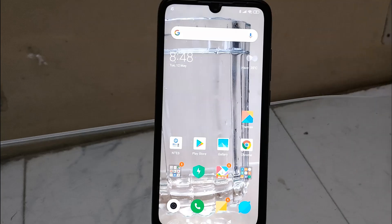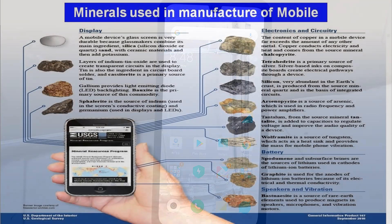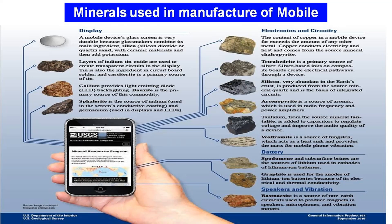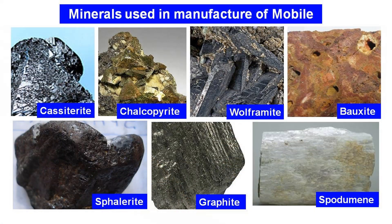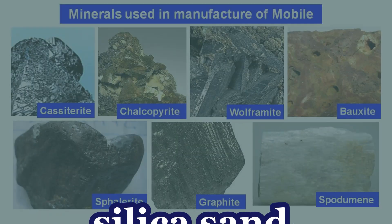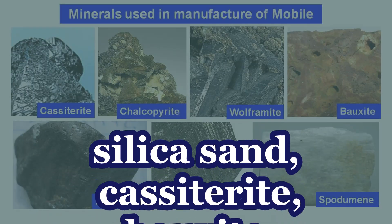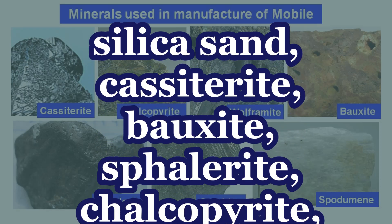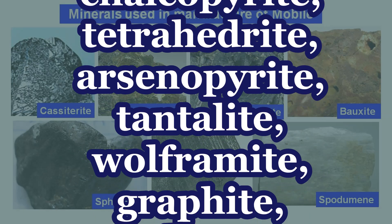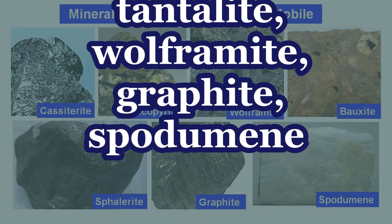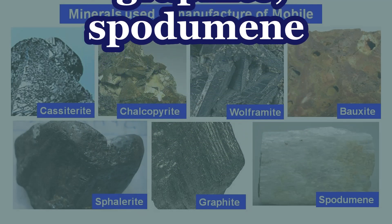Mobile phones cannot exist without mineral commodities. More than one half of all components in a mobile device — including its electronics, display, battery, speakers and more — are made from mined and semi-processed materials and minerals. Minerals like silica sand, castorite, bauxite, sphalerite, chalcopyrite, tetrahedrite, arsenopyrite, tantalite, wolframite, graphite and spodumene are used.